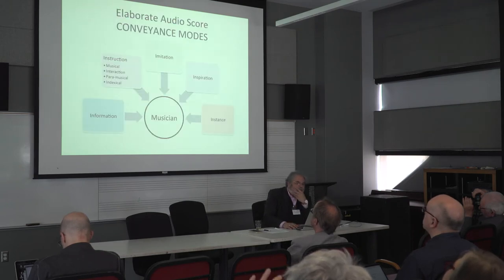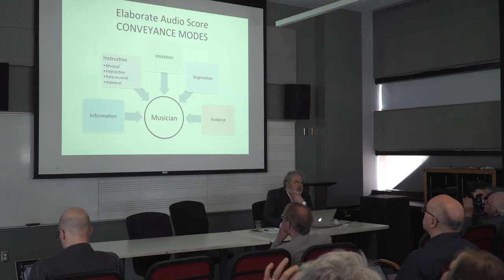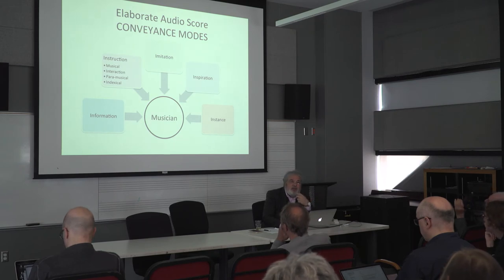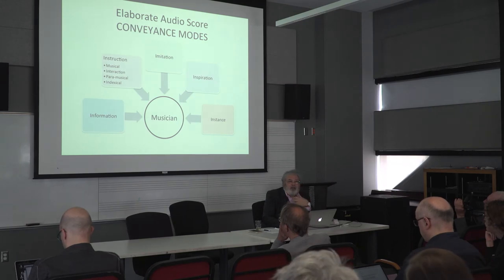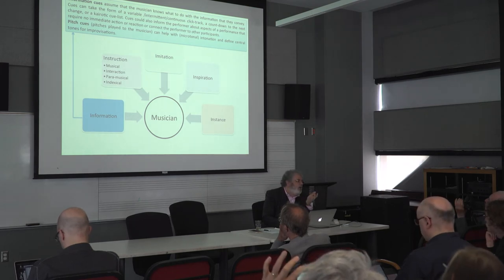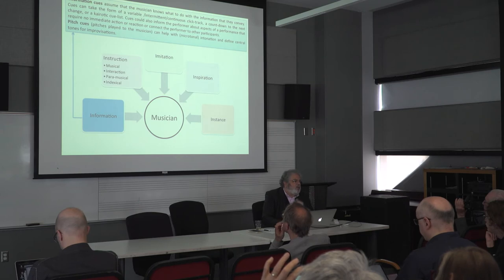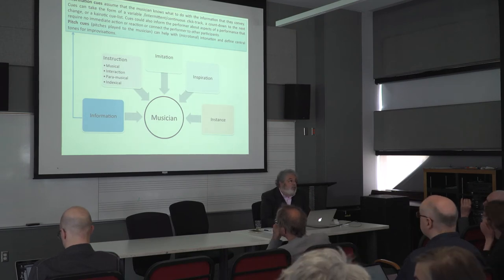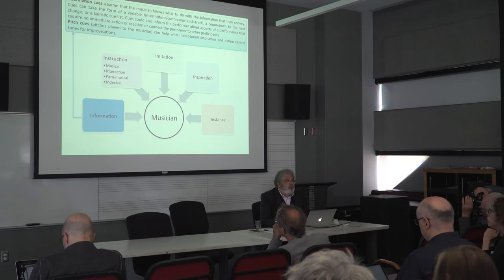So the modes of conveyance. We have five modes of conveyance in a score: information, instruction, imitation, and inspiration. These are the different kinds of commands, or the different kinds of uses that a composer can put into a score for instructing musicians. Information cues are very simple — cues where the musician should know what to do. For example: 'start section two now.' The musician would be informed about what section two means and can start it. That's purely informational. Like pitch cues: a pitch cue is an informational cue, and you're supposed to know what to do with that pitch.